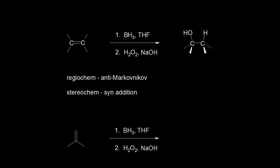Here's the general reaction for a hydroboration oxidation. We start with an alkene, and in the first step — the hydroboration step — we're adding borane, which is BH3, and tetrahydrofuran, which is THF. The second step is the oxidation, where we add hydrogen peroxide and a source of hydroxide anions. We can see what our product would be: we're going to add an OH and an H across our double bond, so the double bond goes away, the OH adds to one of the carbons, and an H adds to the other carbon.